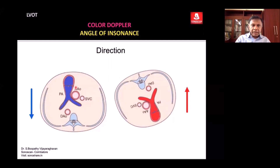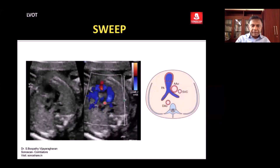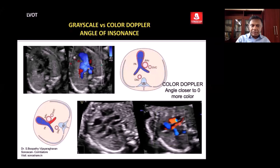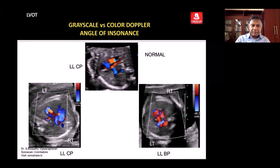Going up from the LVOT you see the pulmonary artery dividing into two branch pulmonary arteries in opposite colors, because on the right it is towards the transducer so it is red, and on the left it is blue. In this fetus, from a similar section, you see both pulmonary arteries in the same color. In the same fetus, this is left lateral and this is right lateral.